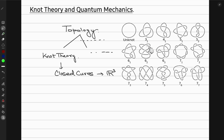Over here you can see different types of knots — some of the prime knots. The first one is called the unknot, the most simple knot, sometimes also called the trivial knot, which is just a ring in mathematics. Next, you can give these knots different names; for example, this one is called a trefoil knot. You see different numbers over here — we'll come back to this notation in a bit. For now, just look at this diagram to get an idea of what knots I'm talking about.